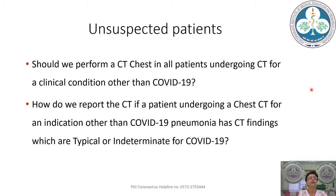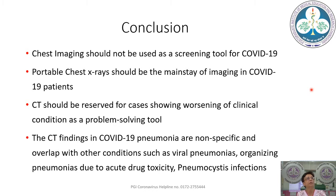Two additional clinical scenarios arise: should we perform CT chest in all patients undergoing CT for other indications? And how do we report CT when a patient done for a non-COVID indication has incidental typical or indeterminate COVID findings? These will be addressed in the Q&A session. In conclusion: chest imaging should not be used as a screening tool for COVID-19. For suspect or positive patients, the mainstay should be portable chest X-rays, with CT reserved for worsening clinical situations or as a problem-solving tool. CT findings in COVID-19 pneumonia are nonspecific and overlap with viral pneumonias, organizing pneumonias, drug toxicity, and Pneumocystis infections.